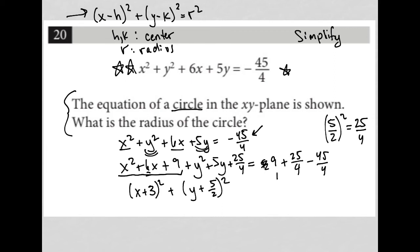And then on the right hand side, because this is very important, this is where my radius is, I need to combine all these guys. So I'm going to turn my 9/1 into 36/4 plus 25/4 minus 45/4. Again this is the non-calculator section so be very careful with your math.